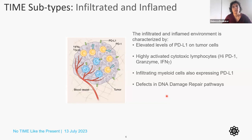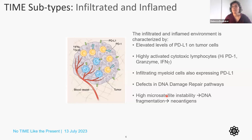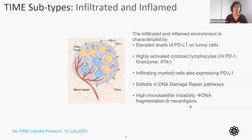Also found in the infiltrated and inflamed phenotype are defects in DNA damage repair pathways — something I worked on early in my career here at Southern Research — understanding what those pathways do and how they can be exploited to generate microsatellite instability, DNA fragmentation, and neoantigens. We have programs focusing specifically on this to see if we can turn cold tumors — the immune-excluded — into infiltrated and inflamed tumors.